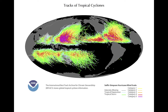Shown here is the spatial distribution of TCs throughout the world. TCs occur in the North Atlantic, East and Central Pacific north of the equator, West Pacific, South Indian Ocean, Bay of Bengal and Arabian Sea, and in the Southwestern Pacific. Most develop at low latitudes and eventually move poleward. Occasionally a tropical cyclone forms in the mid-latitudes, and very rarely they occur in an entirely different basin, such as in the South Atlantic.